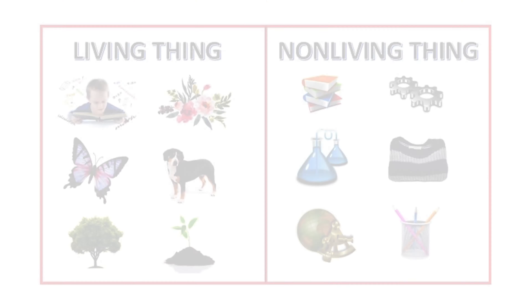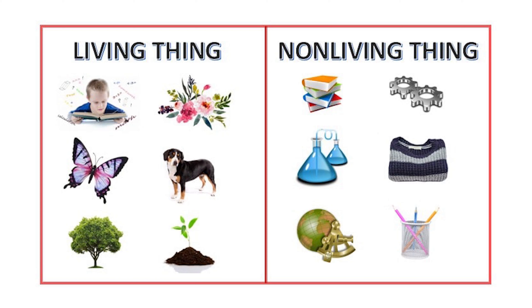We live on planet Earth, which is filled with living and non-living things — so many thousands of animals, plants, fishes, birds, and human beings, and not just that, so many varieties and millions of non-living things to help us. Today we are going to learn about living and non-living things.